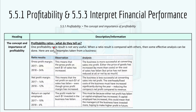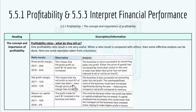One profitability ratio result is not very useful, but when compared with others, effective analysis can be done. For example, if gross profit margin was 20% in 2017 and 24% in 2018, this means gross profit on each $1 of sales has increased — the business is becoming more successful at converting sales into profit. However, if net profit margin fell from 14% in 2017 to 12% in 2018, even though gross profit margin increased, this means the business is less successful at converting sales into net profit. The overhead or fixed costs must have increased significantly, reducing net profit compared to revenue.